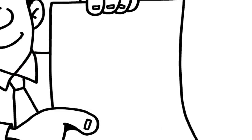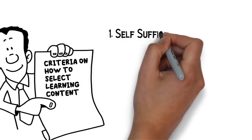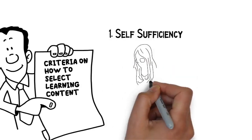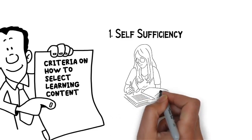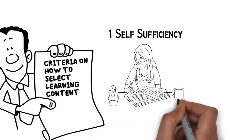Let's proceed to the criteria on how to select learning content. Number one is self-sufficiency. The students must attain maximum self-sufficiency in learning, but in the most economical manner. For example, writing lectures during the discussion will lead the students to learn on their own and at their own pace.